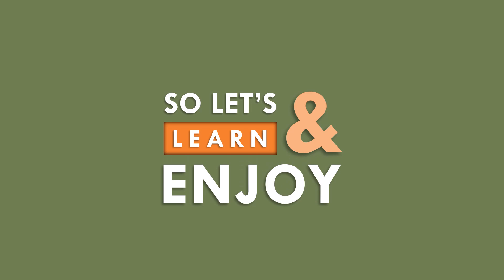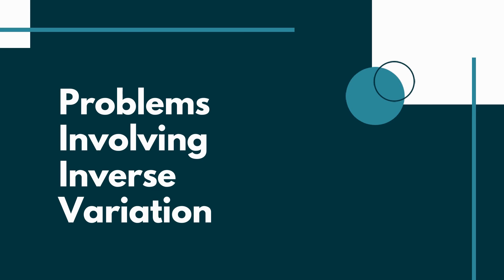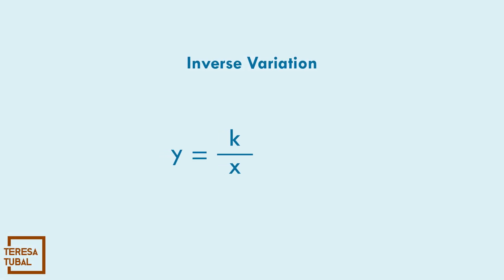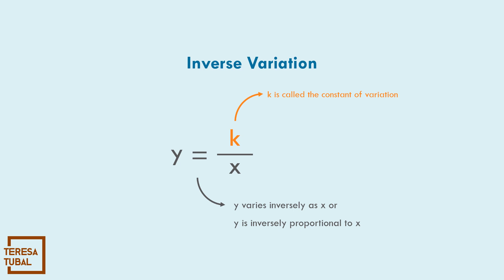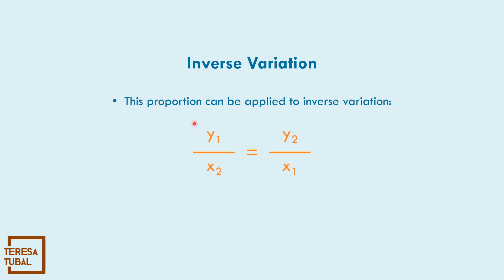Let's learn and enjoy mathematics. Let us solve problems involving inverse variation. The inverse variation equation is y equals k over x. It is read as 'y varies inversely as x' or 'y is inversely proportional to x.' k is the constant of variation. If we use the proportion formula, x sub 1 times y sub 1 is equal to x sub 2 times y sub 2.